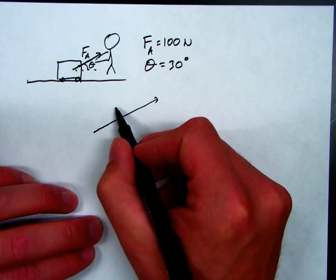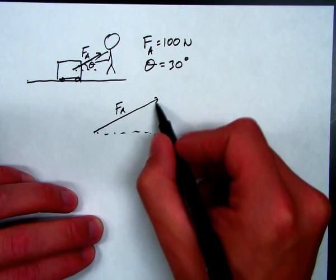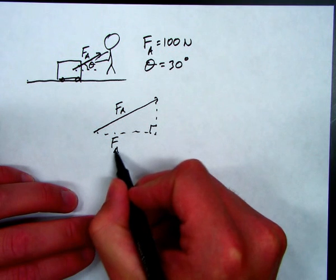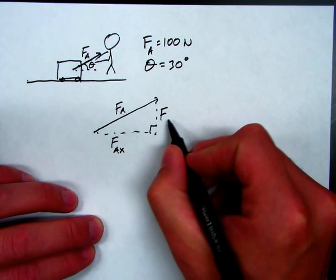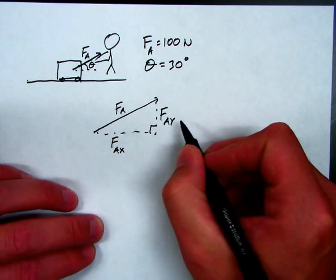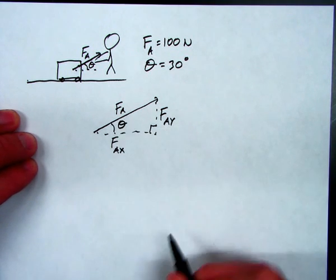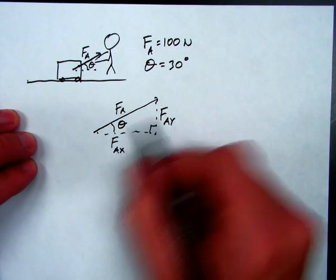If the applied force is FA, some part of that is horizontal. I can call that FAX. And some part of that force is vertical. I can call that FAY. And if this is the angle that I'm pulling it at, I see that I have a right triangle, and now I'm engaging in some trig.